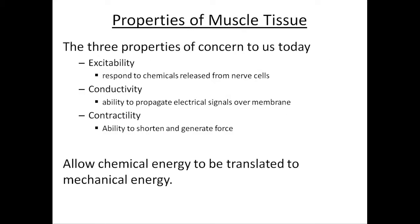The properties of muscle tissue can be divided into three: excitability — the chemicals released from nerve cells; conductivity — the propagation of electrical signals over the membrane; and contractility — the muscle shortening and generating force. This is effectively turning chemical energy into electrical energy, which then changes into mechanical energy. Remember, energy cannot be destroyed; it merely transforms from one form to another.